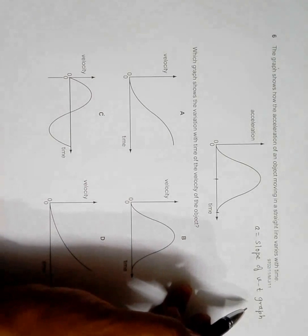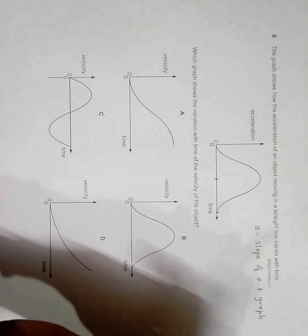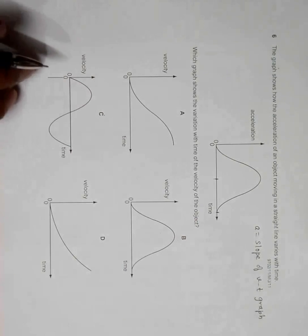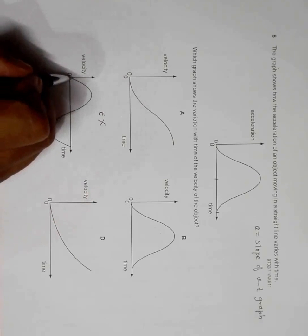Initially the slope of VT graph should be zero. If you go through them, number C does not qualify because here it has got a very high slope.